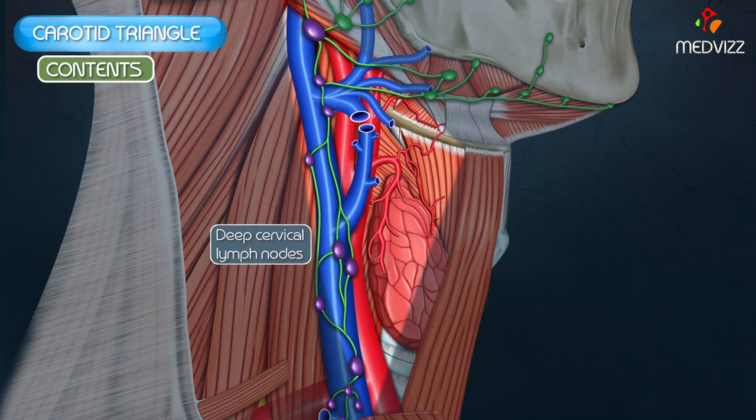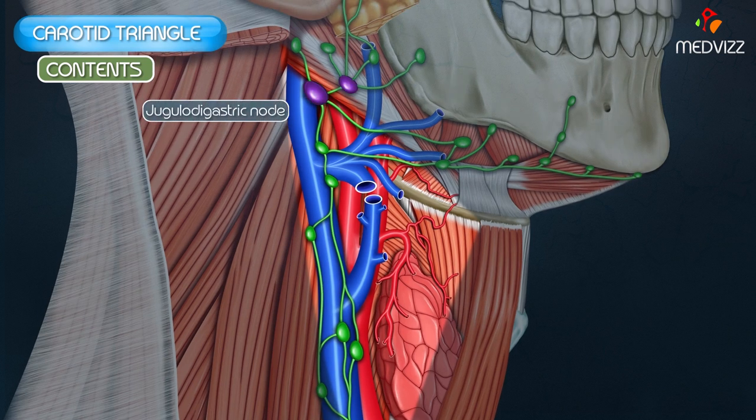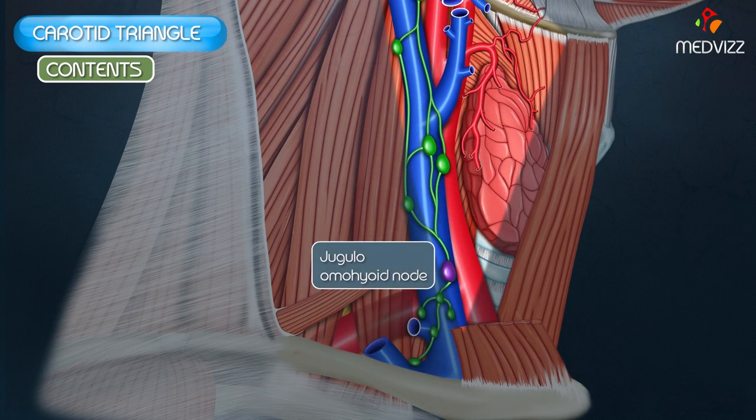The deep cervical lymph nodes are situated along the line of the internal jugular vein. These include the jugulodigastric node and the juguloomohyoid node, located above the inferior belly of the omohyoid muscle. These are the nodes, and this is what you need to know about the carotid triangle.